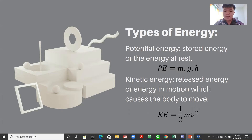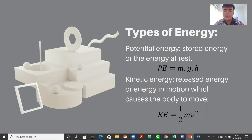There are two common types of energy: potential energy and kinetic energy. Potential energy is the stored energy or the energy at rest. We usually use the equation potential energy equals mass times gravitational acceleration times the height of the object to the ground. Kinetic energy is the released energy or energy in motion which causes the body to move. We usually use the equation kinetic energy is equal to one half of mass times velocity squared.